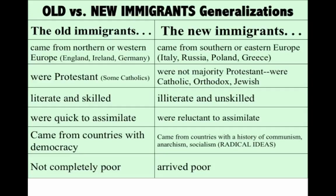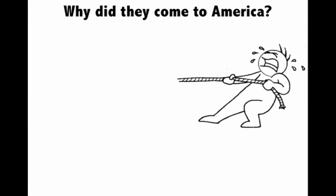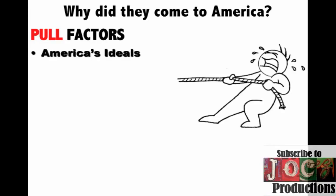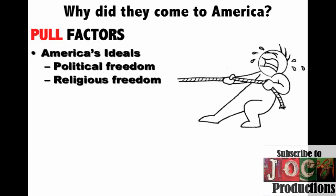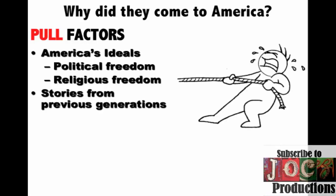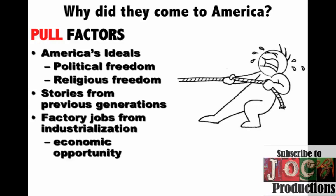The reasons these so-called new immigrants are coming are the same reasons why all immigrants come, broken into two categories: pull factors and push factors. Pull factors include America's ideals — political freedom, religious freedom — stories from previous generations about this mythic place called America. Key in this time period, though, is the jobs created by the industrial revolution: economic opportunity. That's why you have this unprecedented large number of immigrants coming over during the Gilded Age.